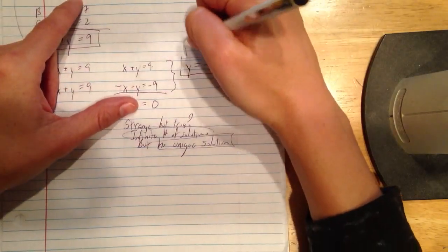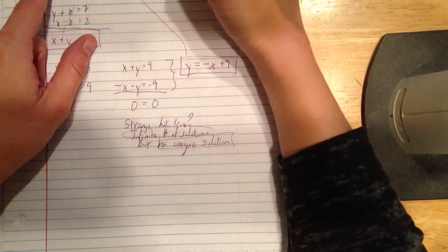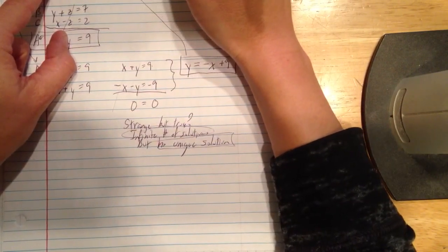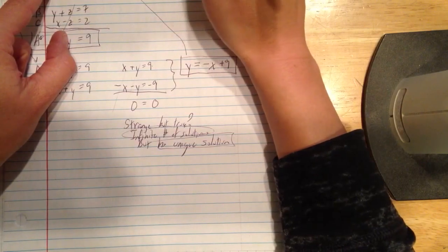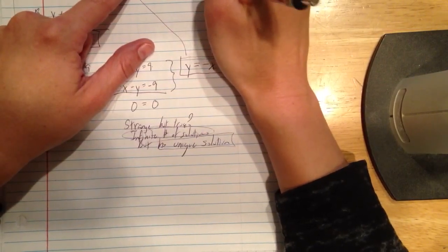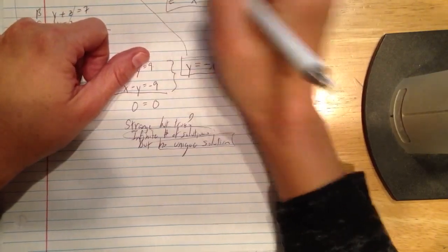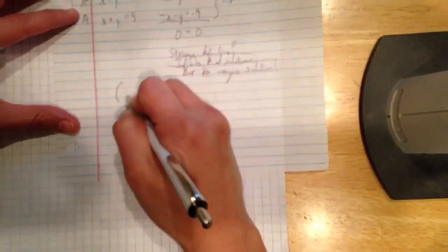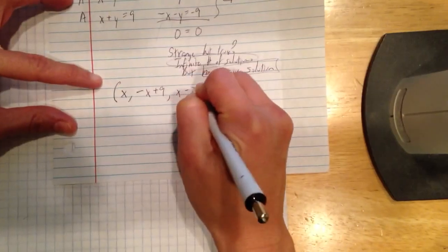So I can go back up to one of these original equations with a z in it, and say, if y plus z is 7, then negative x plus 9 plus z should equal 7. And I can solve for the z. So I can say that 7 plus x minus 9 should be z, so z should be x minus 2. So the form of my solutions is going to be the x can be whatever it wants, the y has to be negative x plus 9, and the z has to be x minus 2.